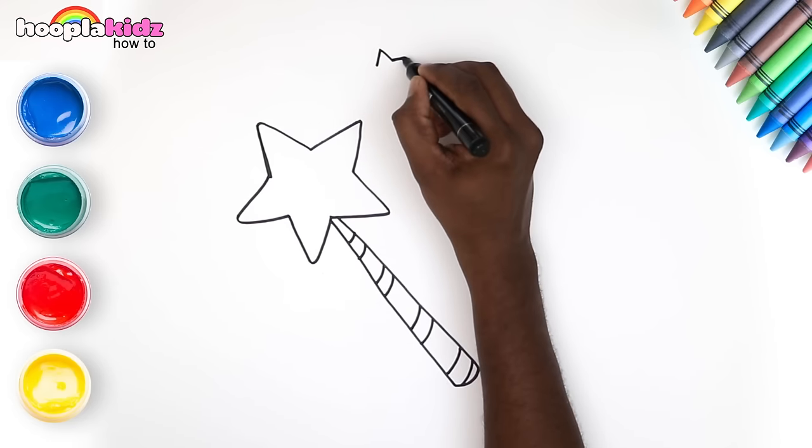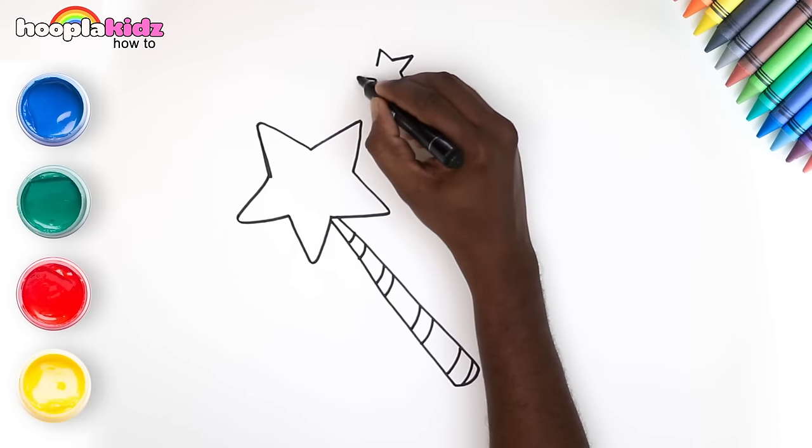Now I think I need to add some more stars. Don't you? Yes! Let's outline this neatly. It's time to color! I want to use yellow for the star. What about you?